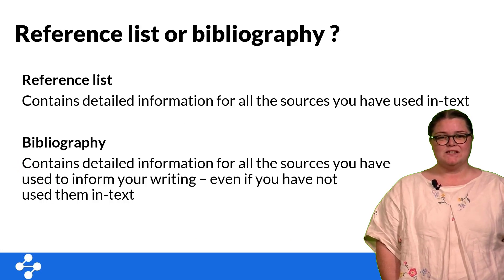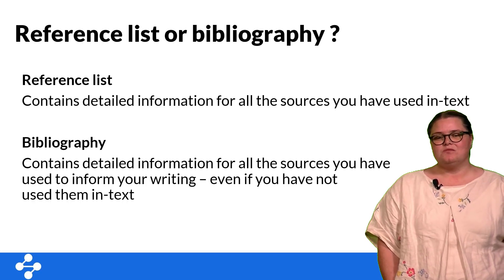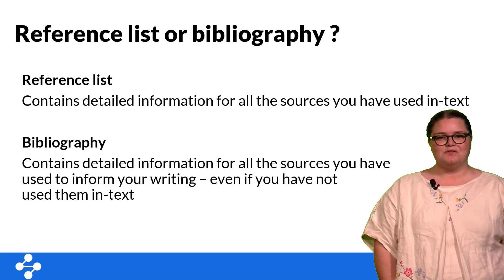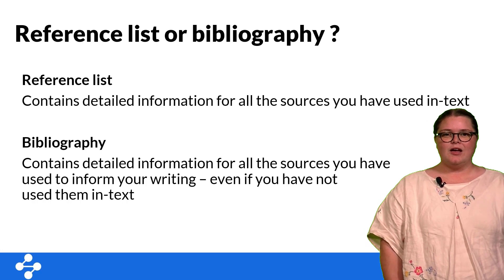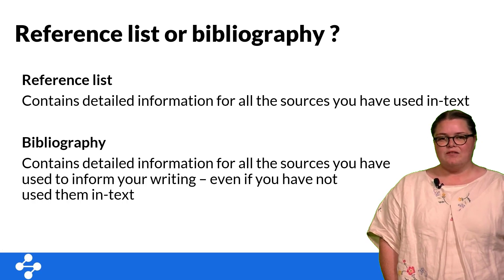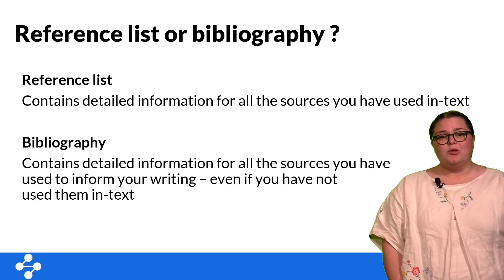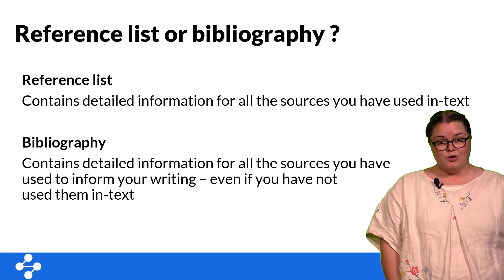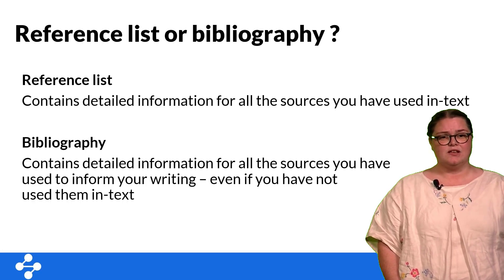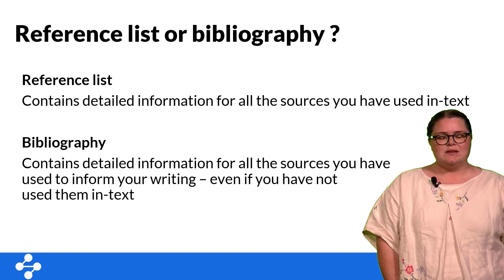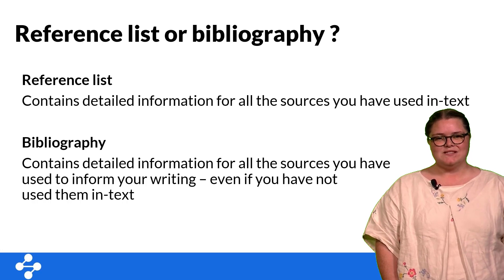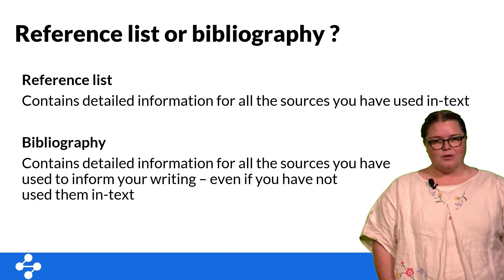The terminology used to describe referencing is also important. You've likely heard the terms reference list and bibliography being thrown around, but while you may hear people use them interchangeably, they do have different definitions as well as different content. A reference list contains the reference details of all the sources you've used in your assignment, so all of these should have a corresponding in-text reference. A bibliography contains all the sources you've read in order to inform your writing, even if you don't use the information in your final draft. A bibliography is often significantly longer than a reference list and is used to demonstrate the depth and breadth of your research. The requirement for a bibliography or a reference list is often discipline-specific, so make sure to find out which one you're required to create.